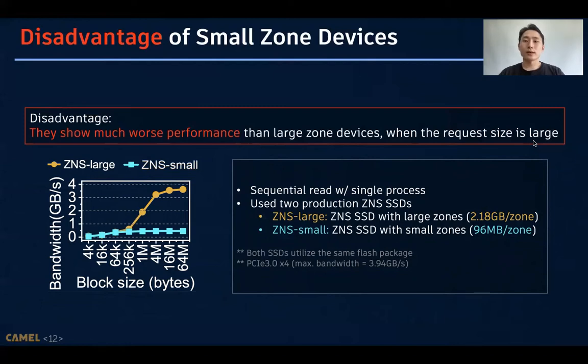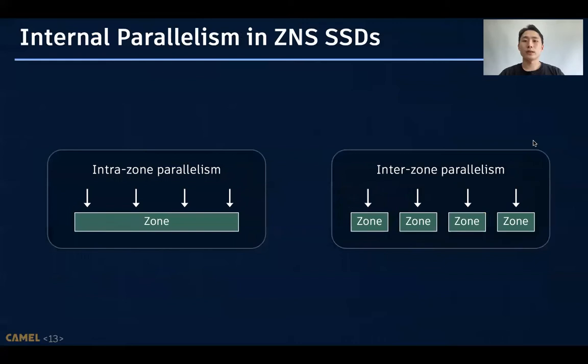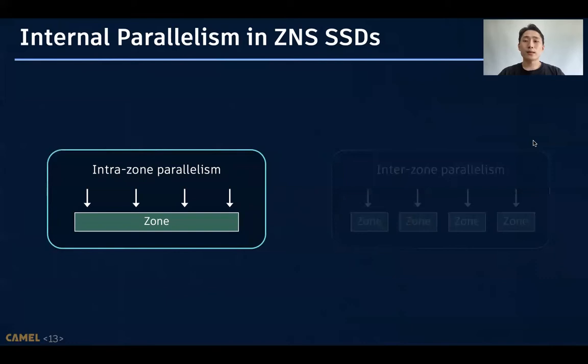The graph shows the read bandwidth with a single process. As shown here, the bandwidth of ZNS small is limited by about 500 megabytes, while ZNS large achieves the maximum bandwidth of PCIe Gen3 when the request size is large. We can infer that the reason is internal parallelism, especially the intra-zone parallelism. As you know, the internal parallelism is an important parameter to achieve high performance of SSDs. It's also important in ZNS SSDs, and there are two types of parallelism, intra-zone parallelism and inter-zone parallelism.